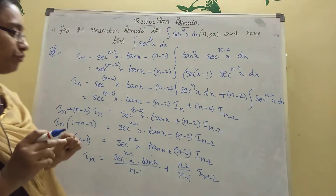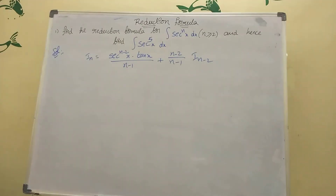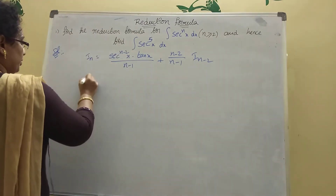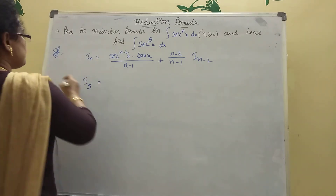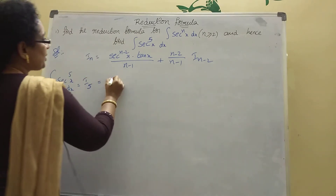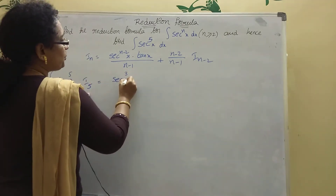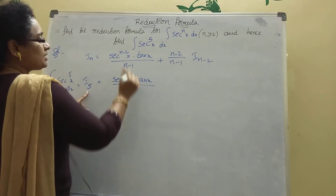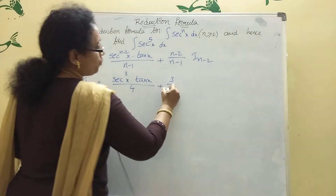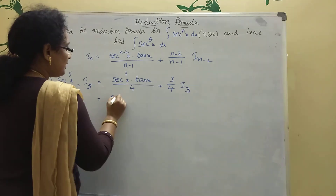Now we find the value of integration of secant power 5 x dx. Taking n equal to 5, we get I_5. Applying the formula: secant power (5 minus 2) x = secant cubed x, into tan x divided by (5 minus 1) = 4, plus (5 minus 2) = 3, divided by 4, times I_(5 minus 2) = I_3.